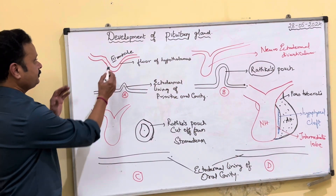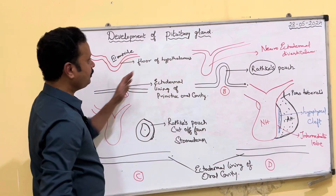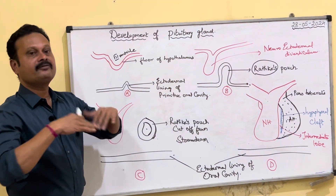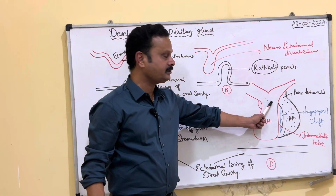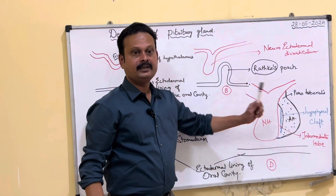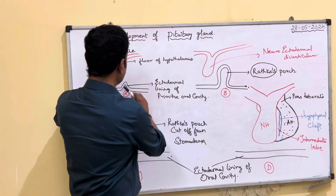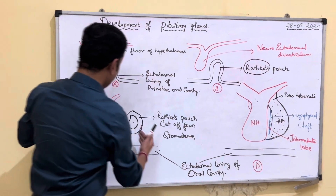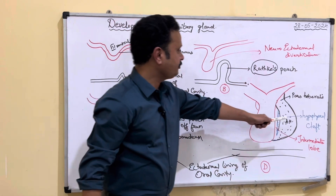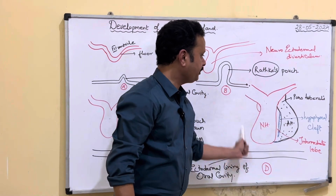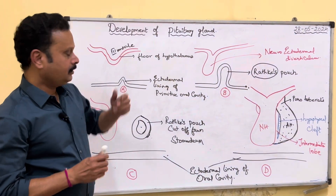The neuroectoderm derived from the third ventricle or from the floor of the hypothalamus finally gives rise to the posterior lobe including its infundibular stalk. Eventually both parts fuse to form the definitive pituitary gland.